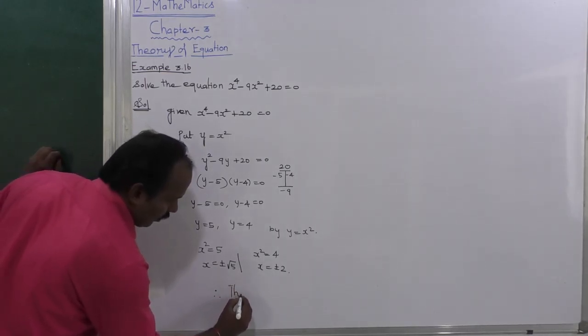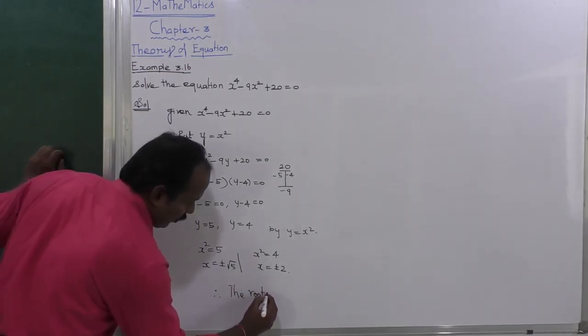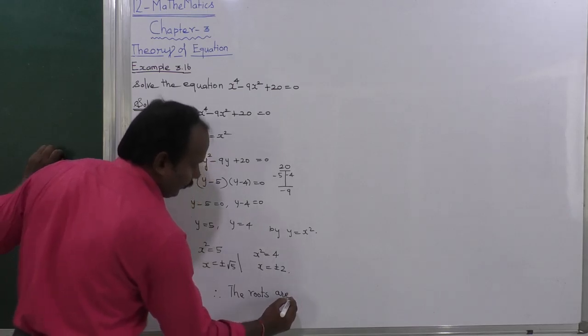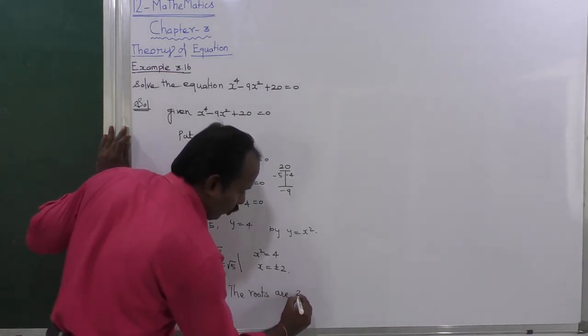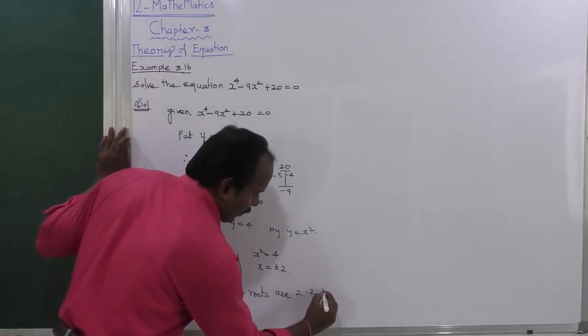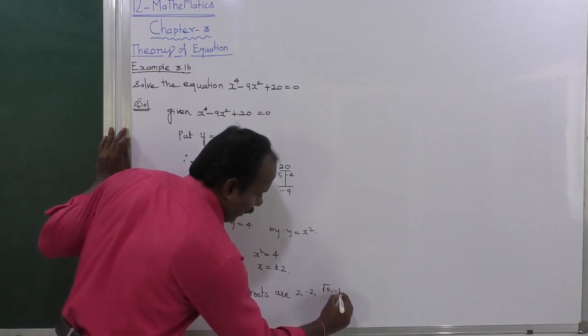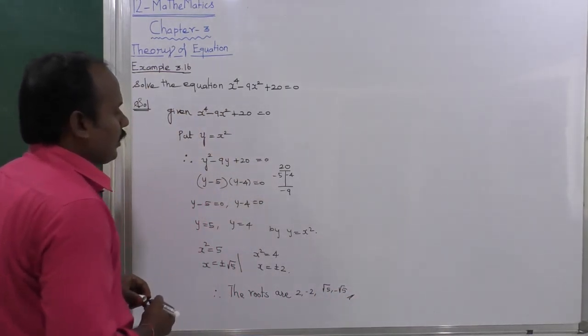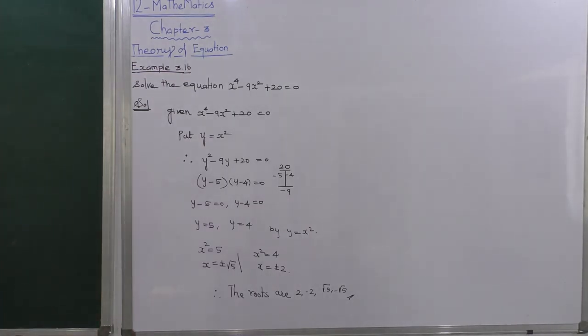Therefore, the roots are 2, -2, √5, and -√5. That's all.